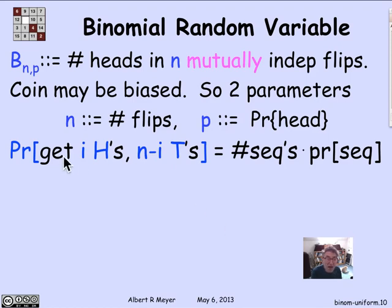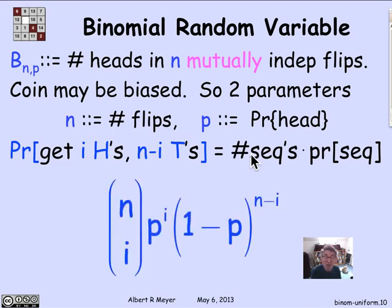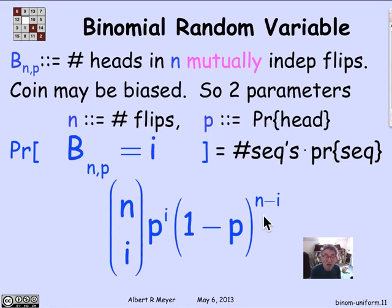What's the probability that you actually toss exactly I heads and N minus I tails in N tosses? That equals the number of possible sequences with I heads and N minus I tails, which is N choose I, times the probability of each such sequence. So the probability of tossing exactly I heads is N choose I times P^I times (1−P)^(N−I). This is the probability that the binomial variable with parameters N and P equals I.